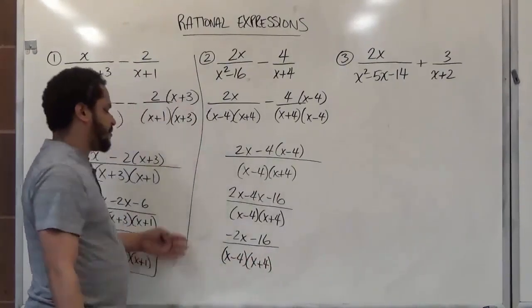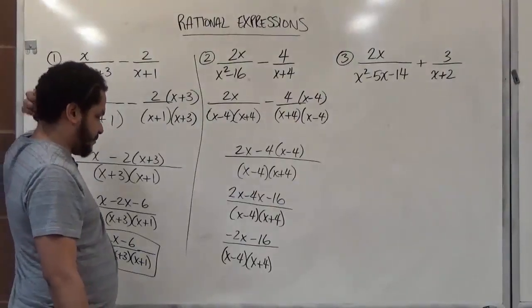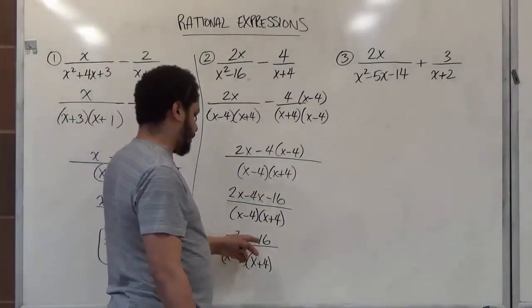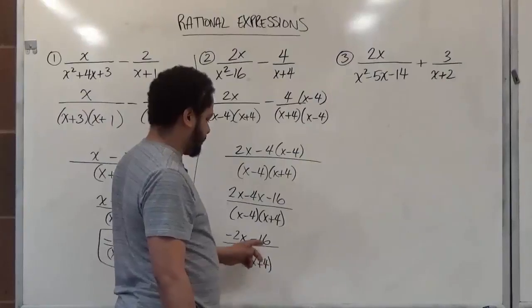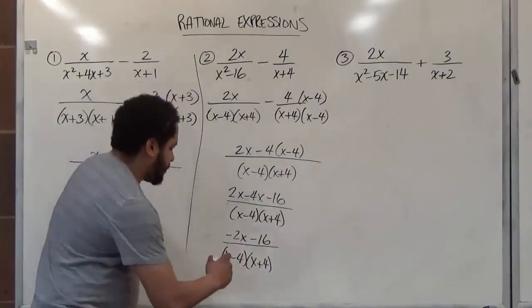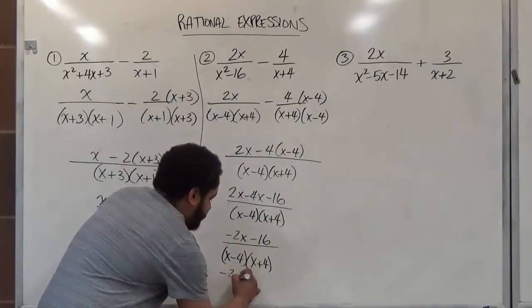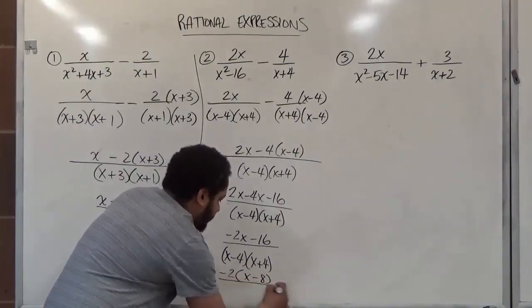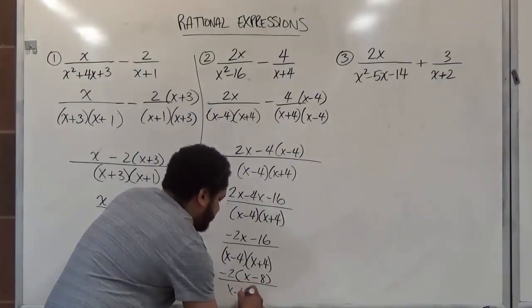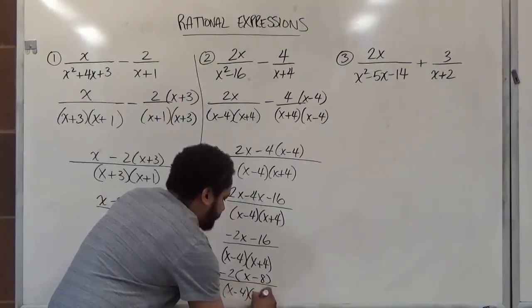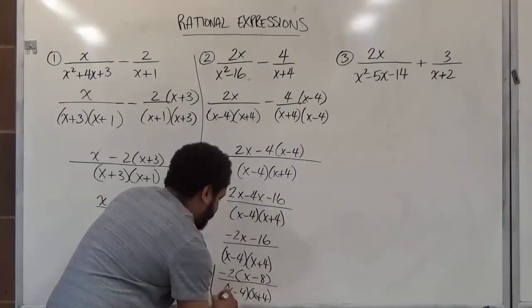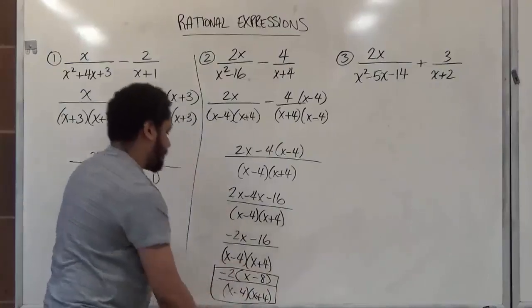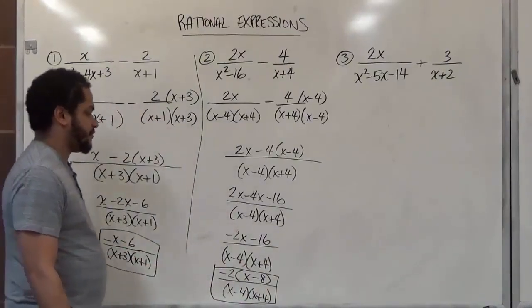If we want to go one more step further to make this a little more simplified, we can factor out the common factor to make sure that none of these reduce with what's left on top. So what we're going to factor out is the negative two. We're going to be left with x minus eight, and we see that there's nothing in common between the numerators and the denominator now. And this is the final result of this fraction. And let's move on to the third one.